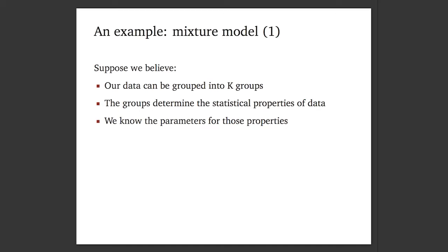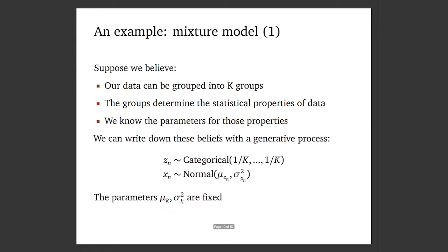Let's go over an example. Suppose that we believe our data can be grouped into K groups, and that each group determines the statistical properties of data in that group. For simplicity, assume we know those parameters. We can write down these beliefs with a generative process: first, draw Z_n from a categorical distribution, which will be some index one through K with equal probability. Then draw the data from a normal distribution where the parameters are chosen by the group.